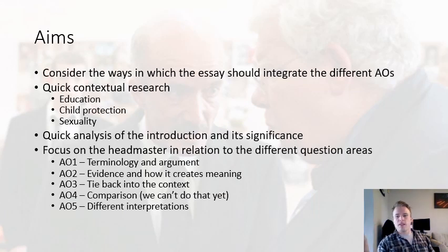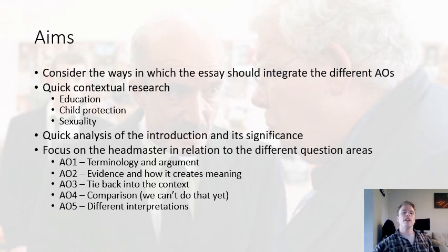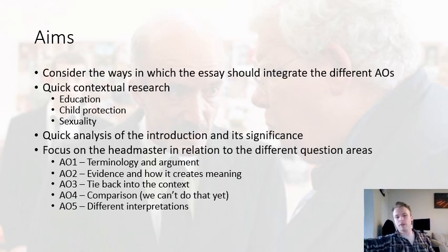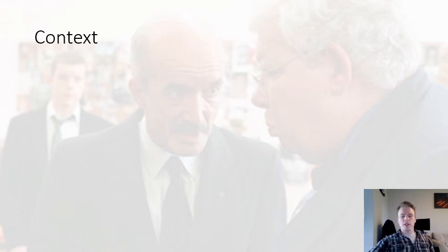Remembering the simplest terms: when you're coming up with these points, you want to incorporate terminology within the points, have a line of argument that runs through them, have evidence — ideally around three or four bits to each point if not more — it needs to have context that underlies it where it's relevant to the question, between points there needs to be comparison to The Prime of Miss Jean Brodie, and we need to incorporate different interpretations as we go through.